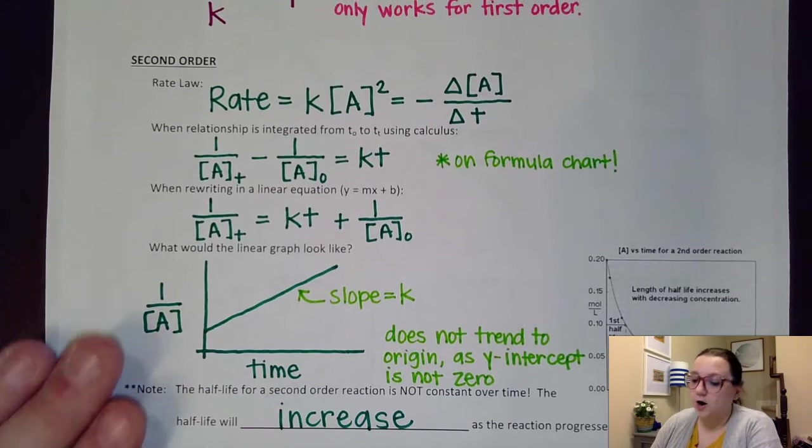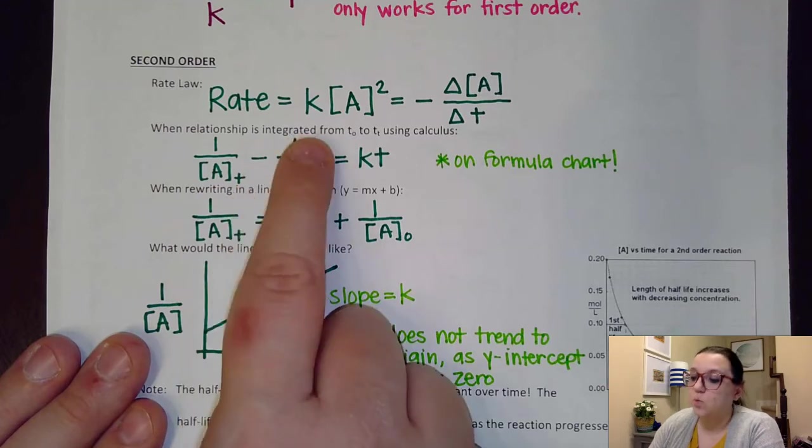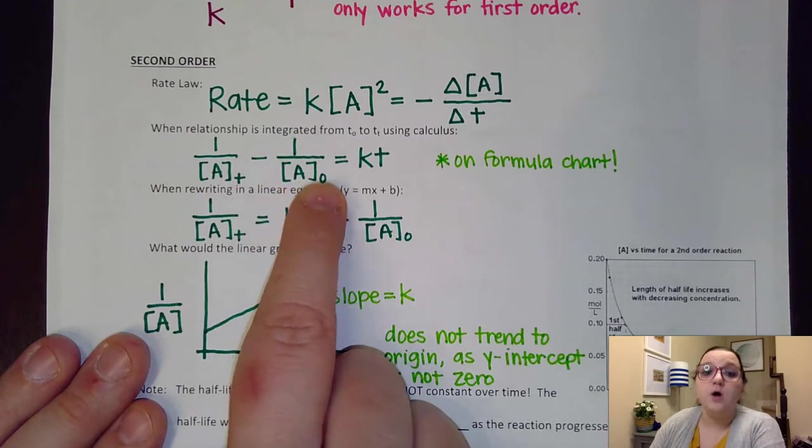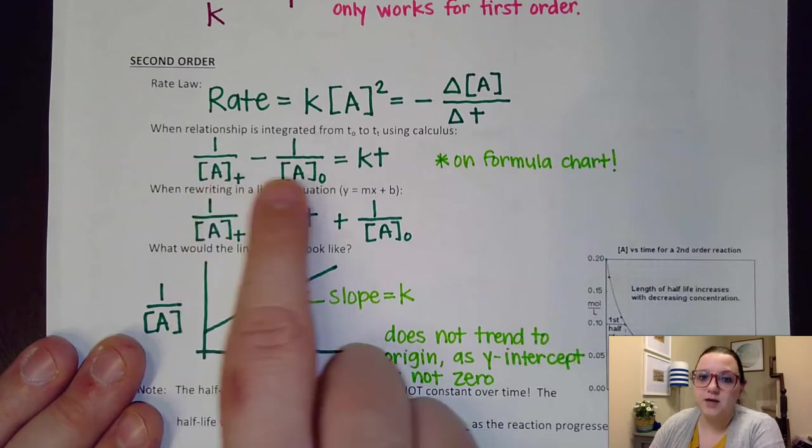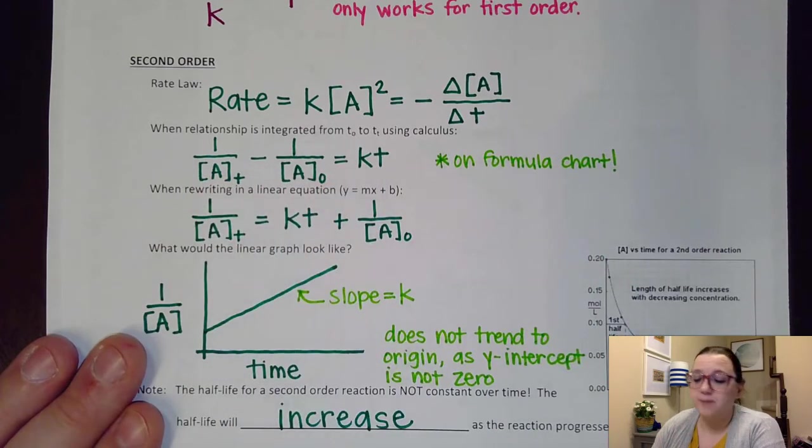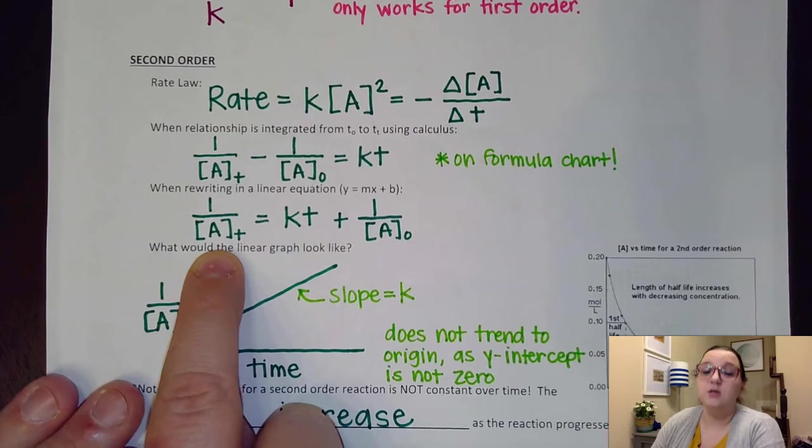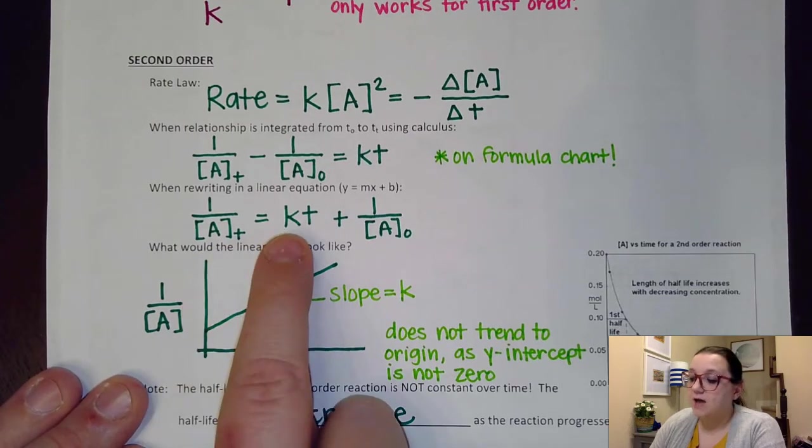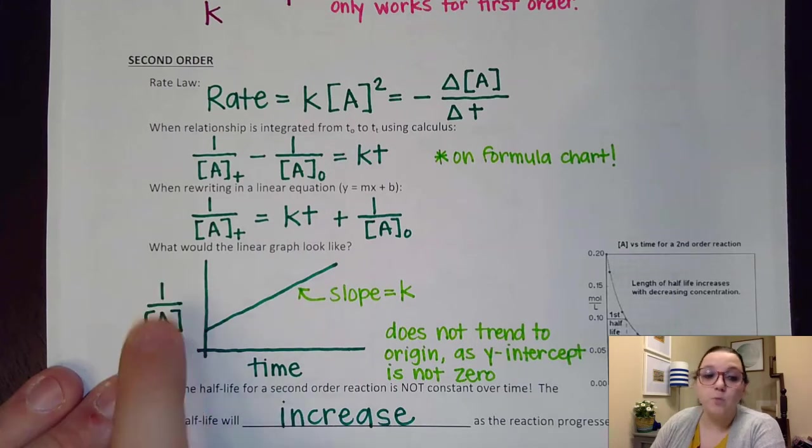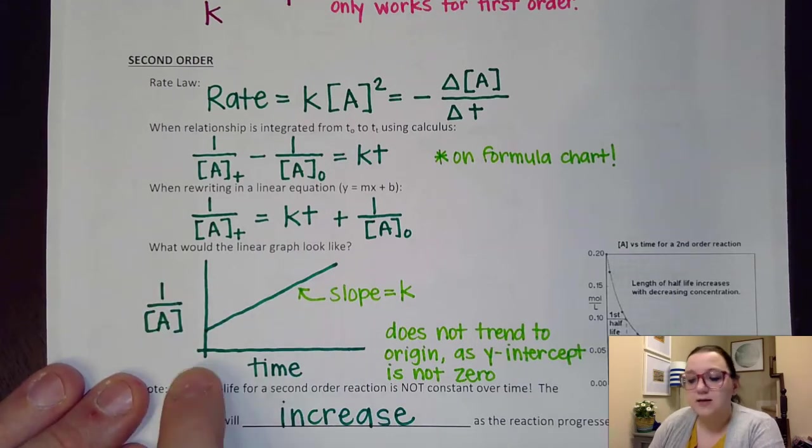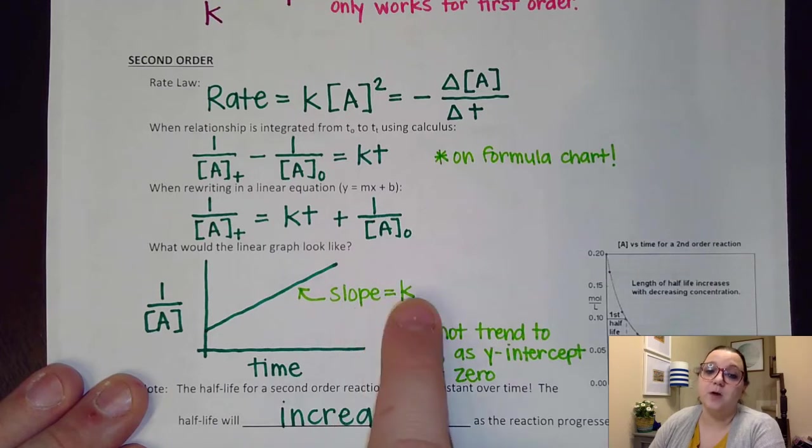So, then, what that means is that our integrated formula is 1 over the concentration of A at some time minus 1 over the concentration at a time of 0, which equals a positive KT. Again, this is on our formula chart. If I was to rearrange this into a linear Y equals MX plus B format, what I would see is that for Y and B, I end up with 1 over concentration. So, again, something different on that Y axis. And then I have a slope of a positive K. And so, my linear graph would look something like this. I would have 1 over A over here on the Y axis. Again, my X axis is always time. But, this time, the linear graph would go up. My slope is a positive K. Now, one other thing to notice, this does not trend toward zero because our Y intercept is not zero. So, this is what the linear graph looks like.